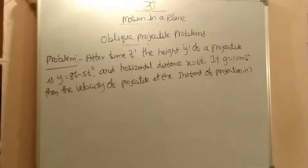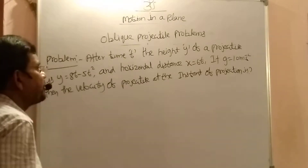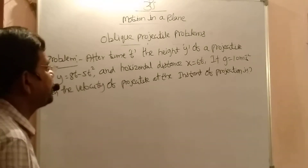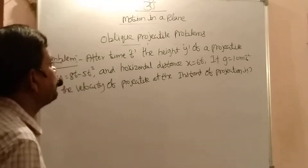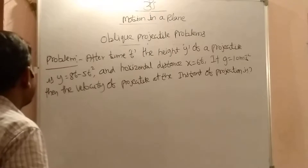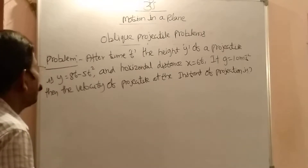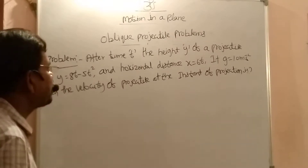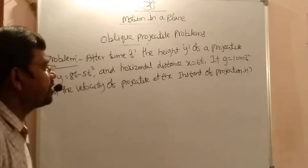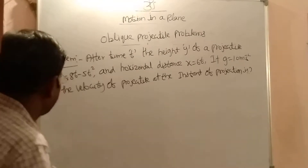After time t, the height y of the projectile is y = 80 - 5t² and horizontal displacement is x = 60t. If g = 10 m/s², then the velocity of the projectile at the instant of projection is to be found.